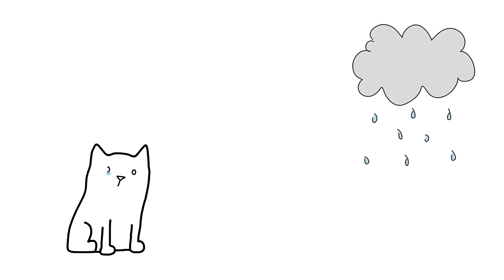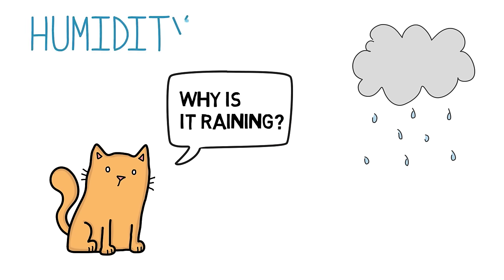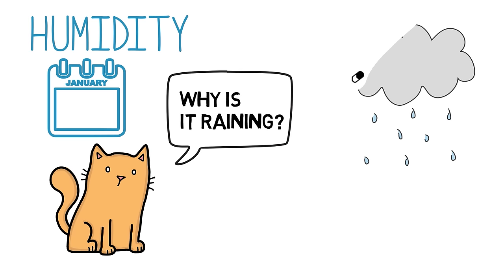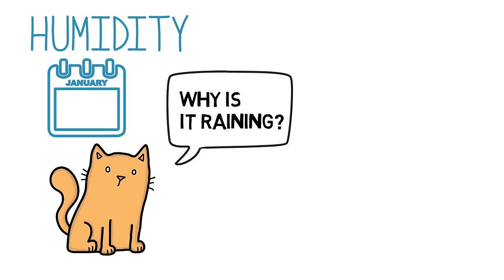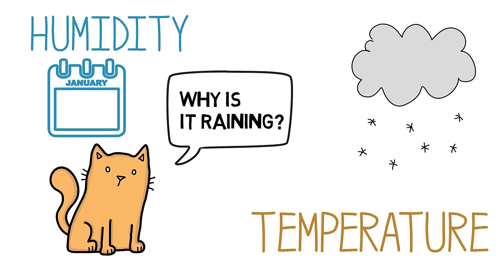To see how contrastivism works, let's start with a simple example. Imagine that it's raining, and a friend asks you why it's raining. One natural answer is that the humidity was so high that it passed a certain threshold. That explains why it's raining instead of staying dry, because it would not be raining if the humidity were lower. But now, add that it's January, and the person is asking why it's raining instead of snowing. In this context, a different answer becomes natural: it's raining because the temperature in the atmosphere is above freezing, since it would be snowing if the temperature were lower.